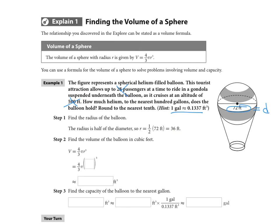That's really all we need. We're just going to plug it in and let our calculator do the work. Four thirds pi times 36 cubed is going to be approximately 195,432.196 cubic feet. So we're going to take that number.